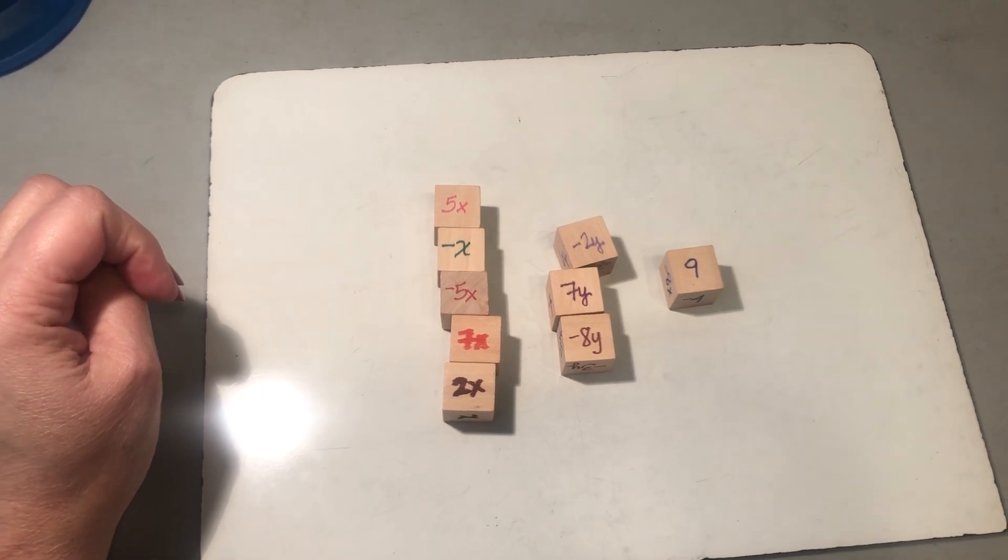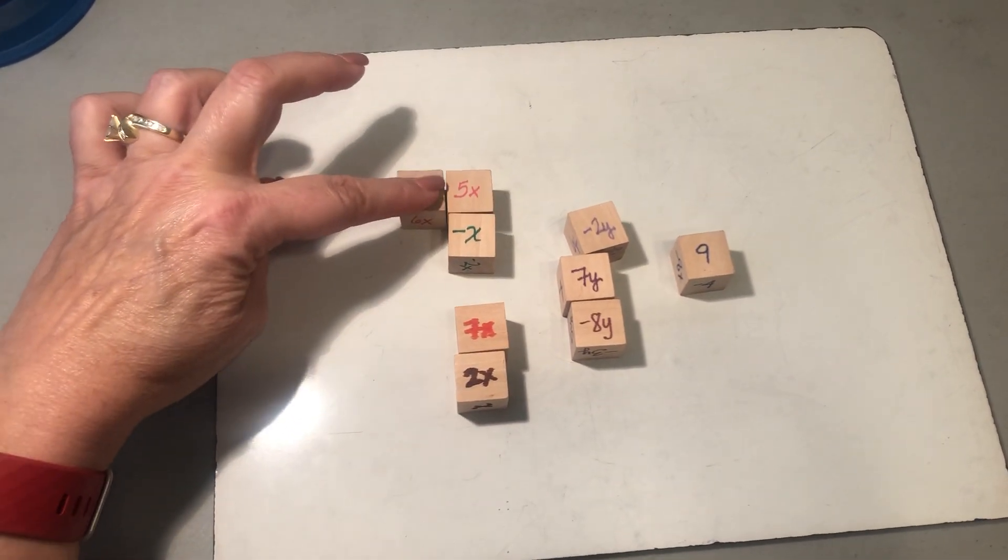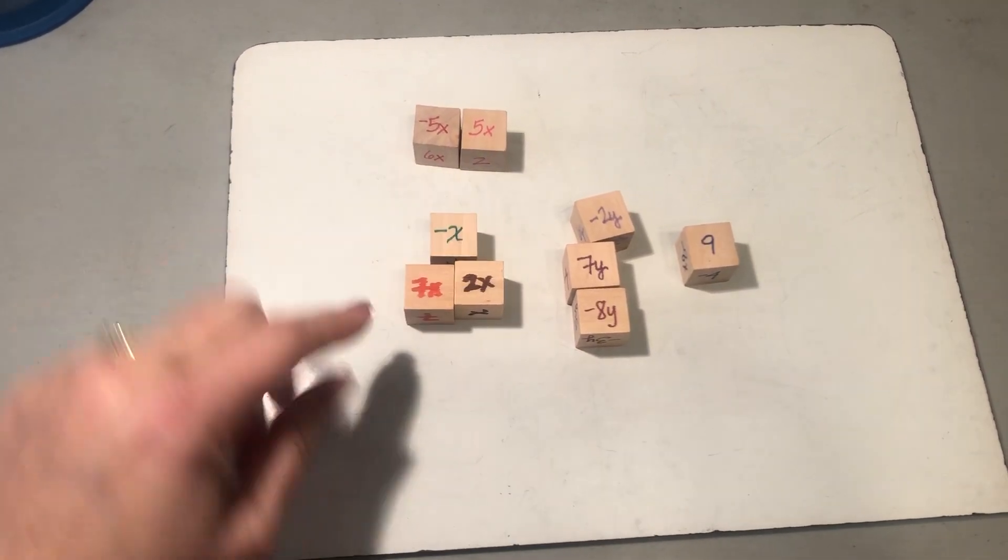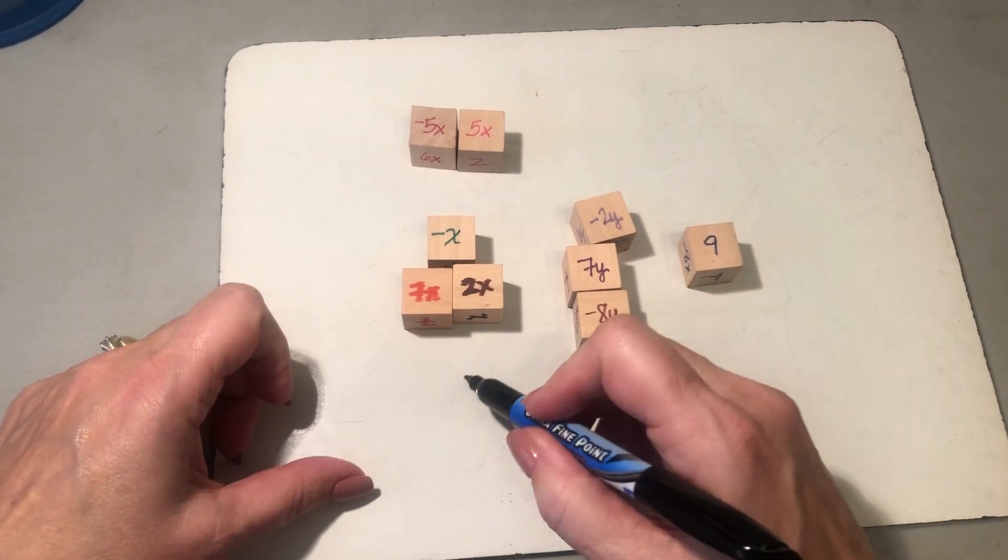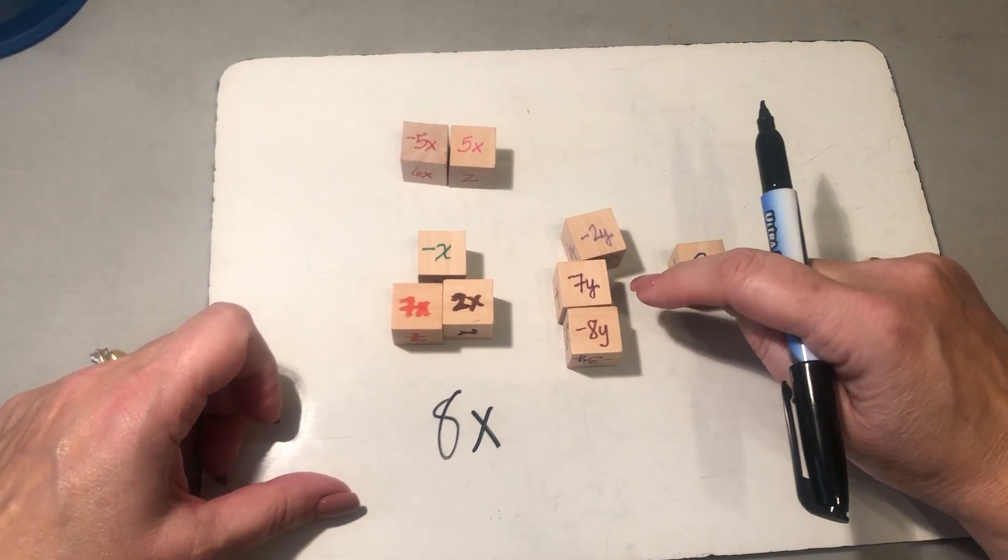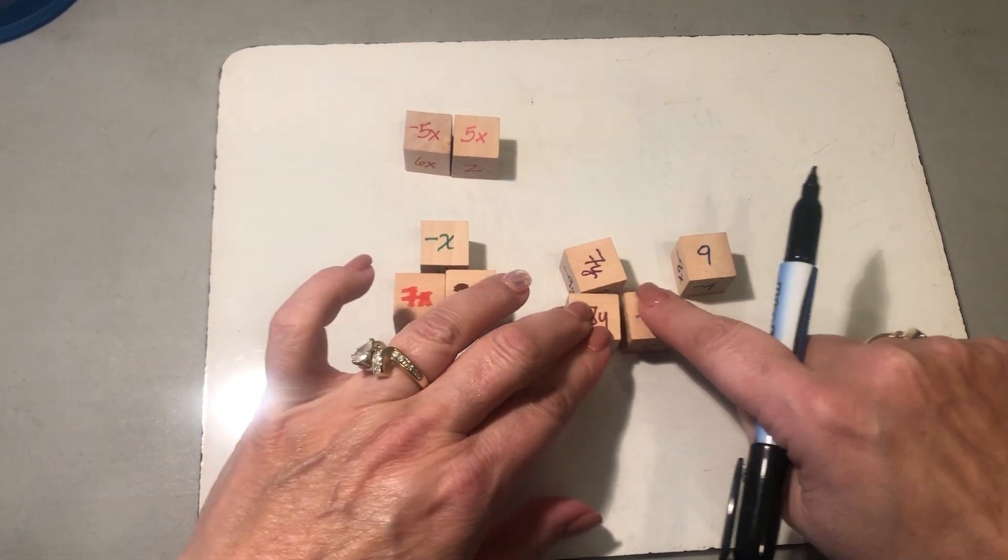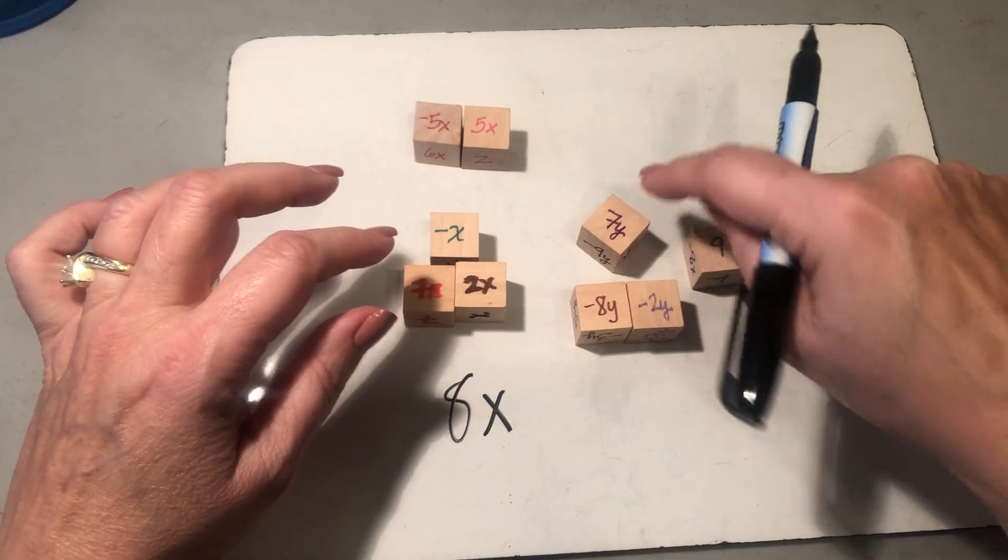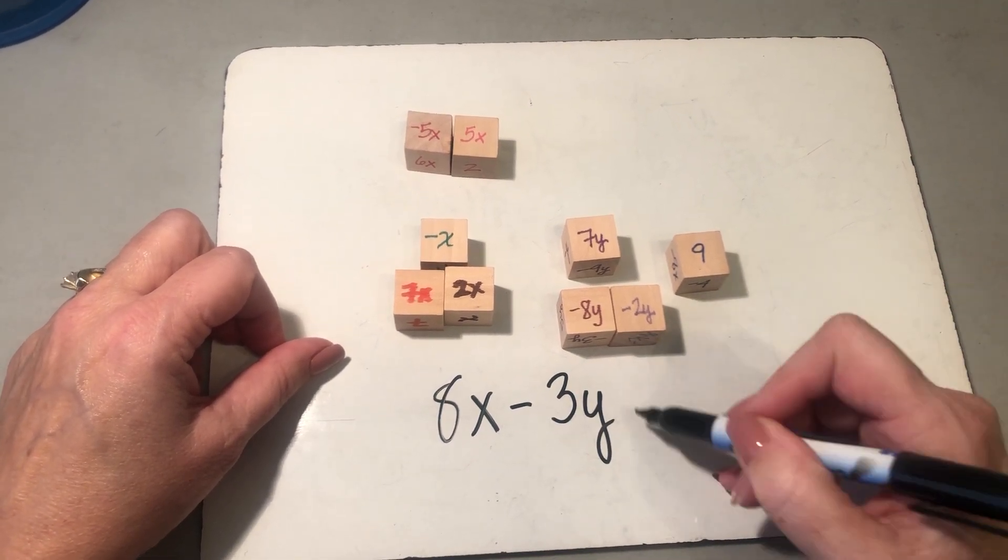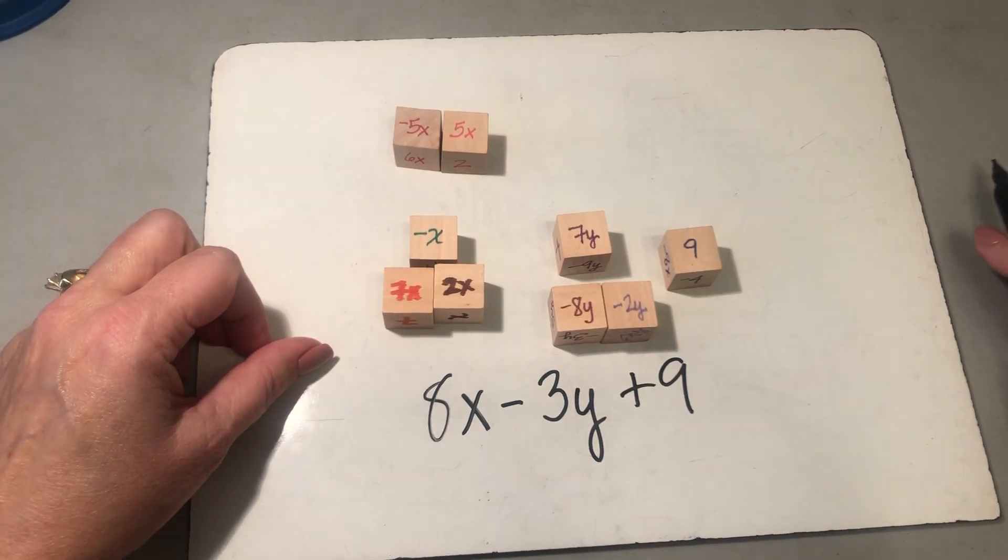And numbers. Okay, zero pair, leaving me with 9x minus an x, 8x. No zero pair here but this will give me negative 10 plus 7 which is negative 3y and then the positive 9 out there.